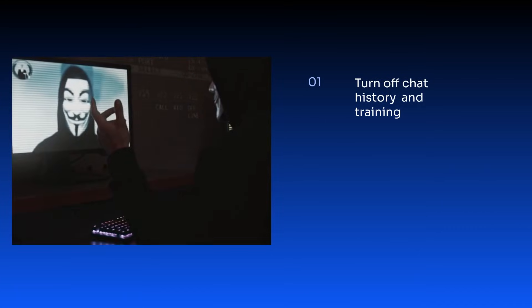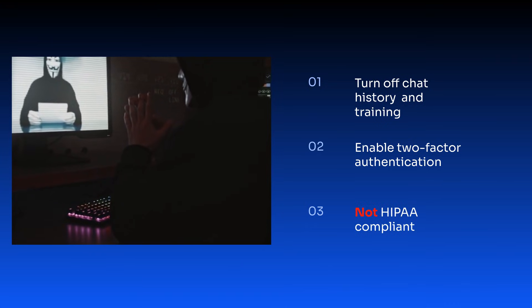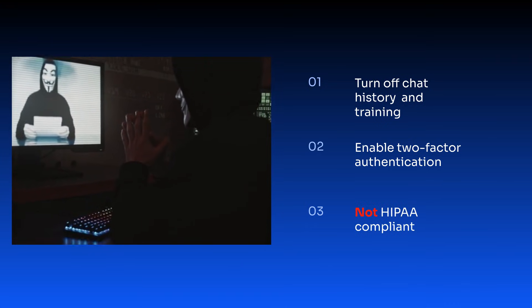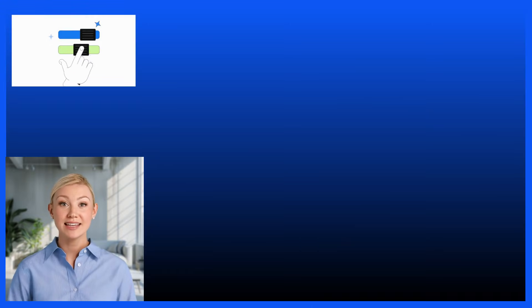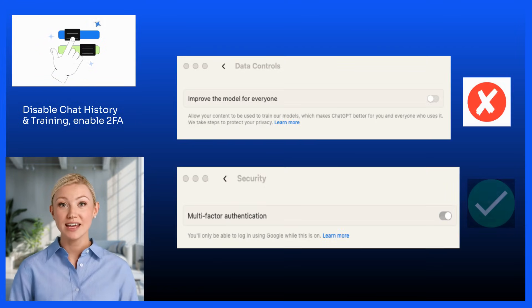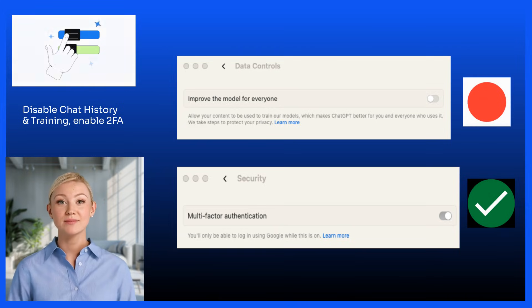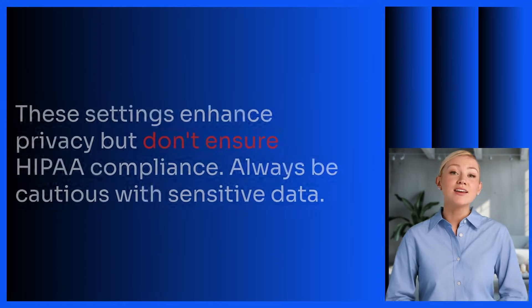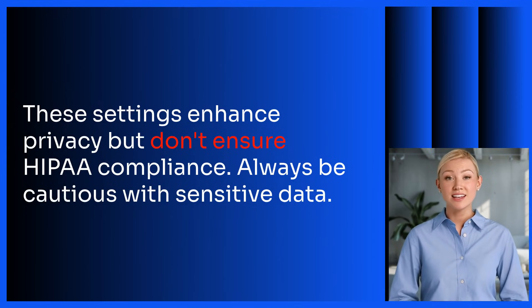Enhancing privacy involves turning off chat history, training, and enabling two-factor authentication. Log into ChatGPT and navigate to settings. Turn off chat history and training, enable two-factor authentication, and remember to save backup codes for added security. These settings enhance privacy, but don't ensure HIPAA compliance.